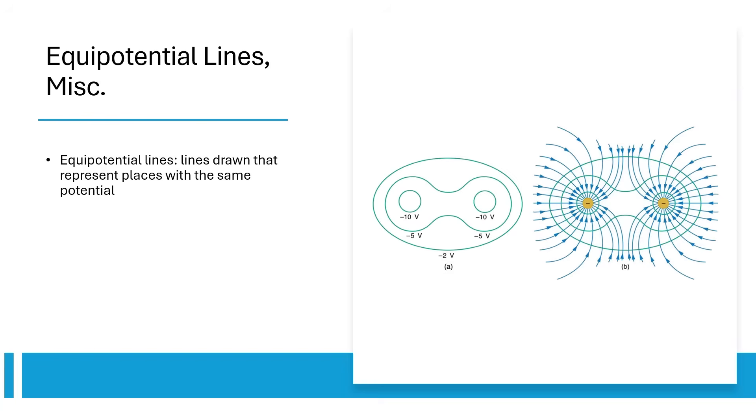We can describe the electric potential of a system using equipotential lines. These lines are drawn so that every point on the line has the same electric potential. E-field lines are always perpendicular to equipotential lines because charges are always trying to move toward lower electric potential.